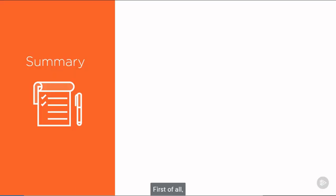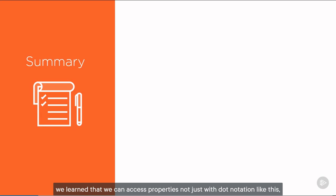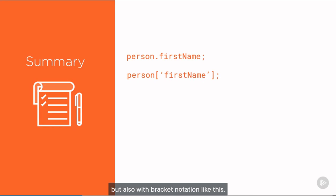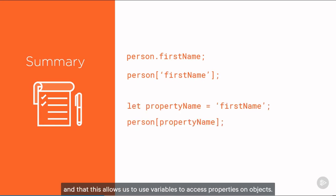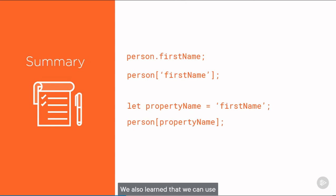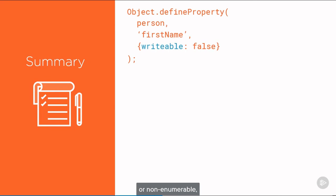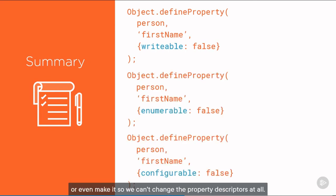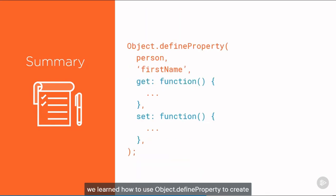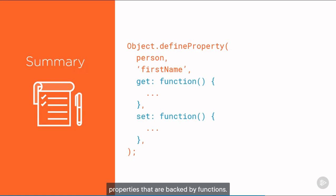Here's a quick recap of the key takeaways from this module. First, we learned that we can access properties not just with dot notation but also with bracket notation, which allows us to use variables to access properties on objects. We also learned that we can use object.defineProperty to make properties read-only or non-enumerable, or even make it so we can't change the property descriptors at all. And finally, we learned how to use object.defineProperty to create getter and setter properties that allow us to create properties that are backed by functions. In the next module, you'll learn about prototypes, how they're used to create inheritance chains, and how to create your own prototypal inheritance.